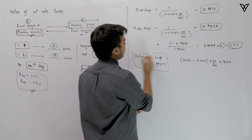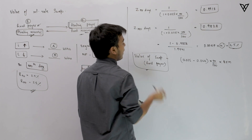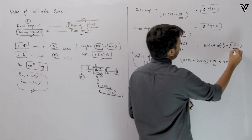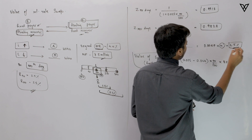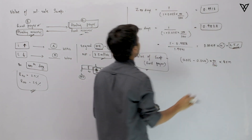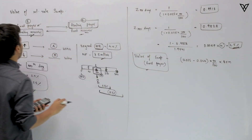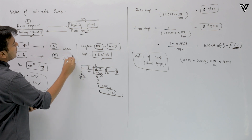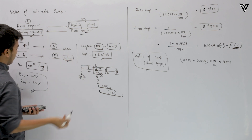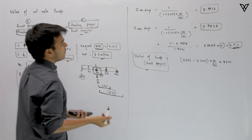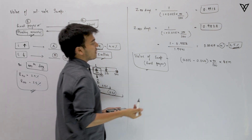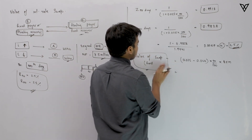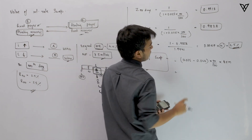The interest rates have gone down — the swap rate has fallen from 4.4% to 3.5%. Since the swap rate has gone down, Party B would be winning. That is what we need to verify through the calculation.